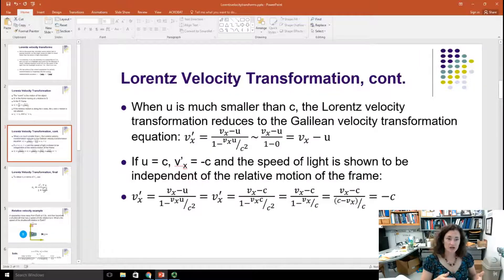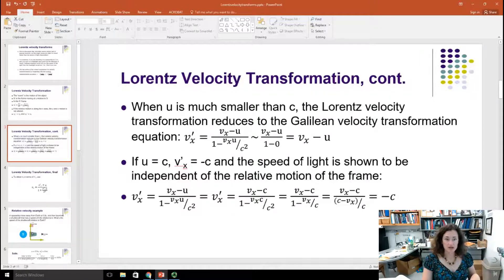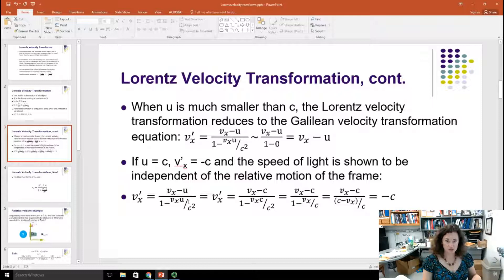Another point is that if the speed of your frame is the speed of light, if U is equal to C, then any speeds measured outside of the frame, VX prime, would equal to the magnitude of the speed of light. So the speed of light then is shown to be independent of the relative motion of the frame. And I can show that here just by simply plugging in U is equal to C and going through a few simple algebraic steps.